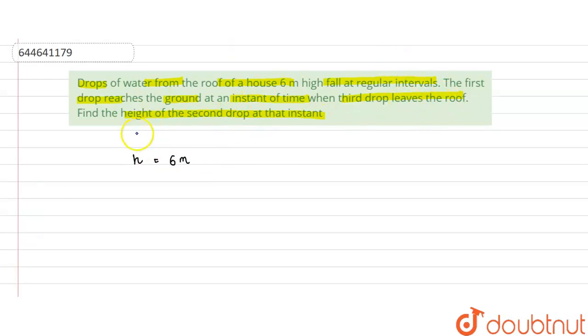We have been given that the first drop reaches the ground when the third drop leaves the roof. That means the time interval in which the first drop reaches the ground is the time interval for three drops to fall.